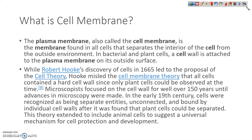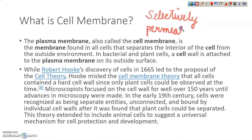Each cell is bounded by an extremely thin living membrane which is called the cell membrane. It is a selectively permeable membrane. It allows the flow of only some substances in and out of the cell. It helps in maintaining the chemical composition of the cell. It is the outermost part, so it protects the internal structures and gives the cell a proper shape.